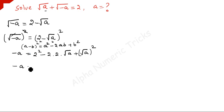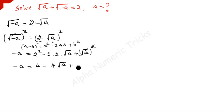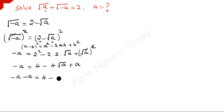So negative a equals 4 minus 4 times square root of a, plus a. Now take the positive a to the left-hand side; it becomes negative a. So negative a minus a gives minus 2a, which equals 4 minus 4 square root of a.